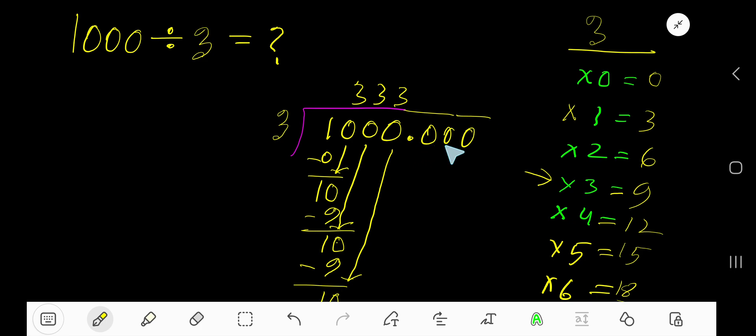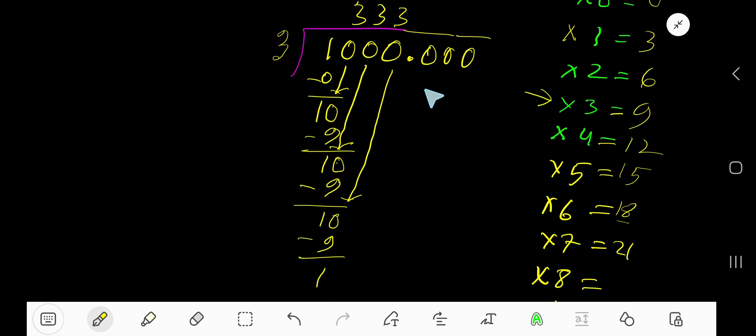Just take a decimal and add any number of zeros. Bring down the first 0, but before this 0 there is a decimal. The decimal must come to the quotient directly.